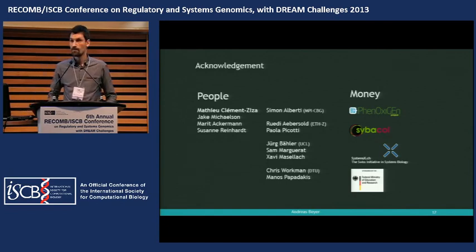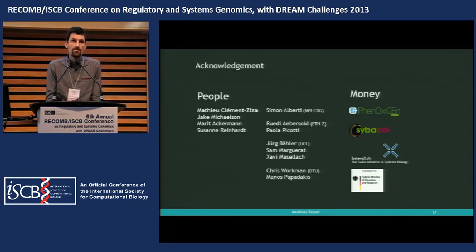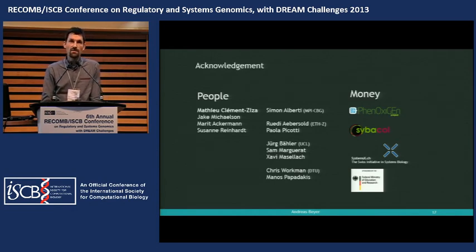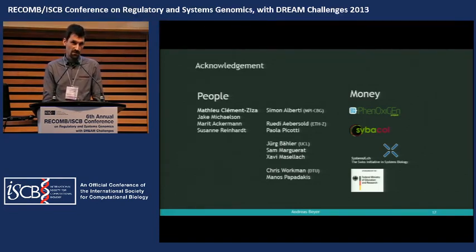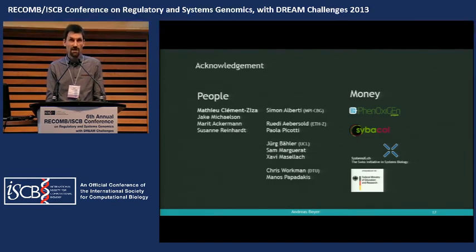Question: What fraction of your protein QTLs are also explained by RNA sequence level QTLs? We didn't do that comparison directly. RNA data are available for the same cross, but were done by Rachel Brem and others in Leonid's group, so we don't think the data is directly comparable. What we're currently doing is repeating the protein measurements with newer technology from Rudy, and in parallel doing RNA sequencing from the same samples, which will put us in a better position to answer this question.